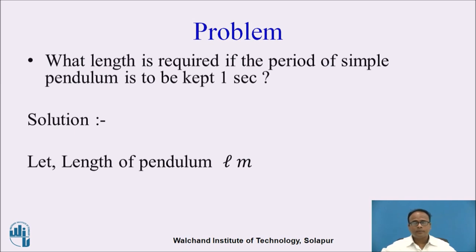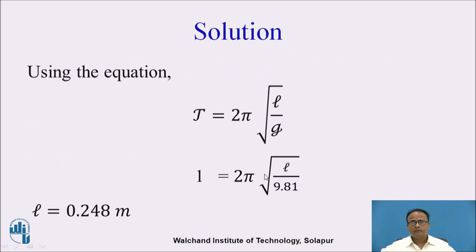Let us consider another problem: What length is required if the period of a simple pendulum is to be kept 1 second? Here we have to find the length of pendulum required for a period of 1 second. Let length of pendulum be L meters. Using T = 2π √(L/g), putting T = 1 second: 1 = 2π √(L / 9.81). By solving, we get the length of pendulum as 0.248 meters.